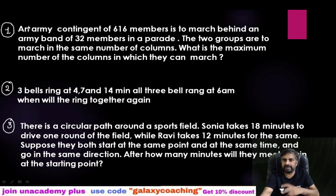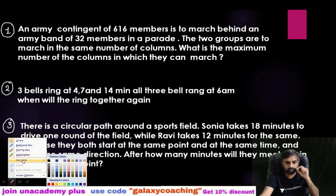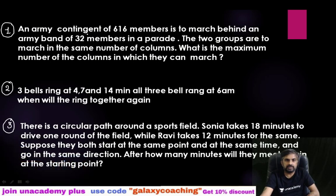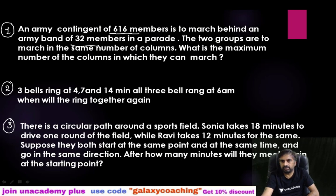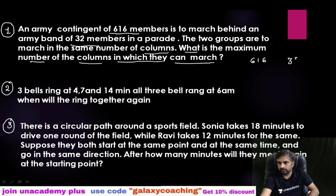I am going to solve three questions one by one and I will tell you the trick. First of all you need to understand the question properly. An army contingent of 616 members is to march behind an army band of 32 members in a parade. The two groups are to march in the same number of columns. What is the maximum number of columns in which they can march? So here we have two numbers: 616 and 32, and we have to arrange them in the same number of columns.